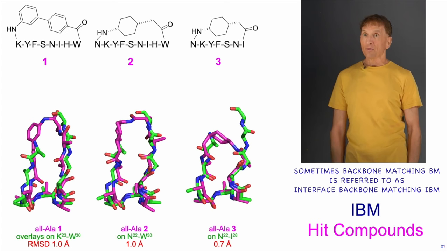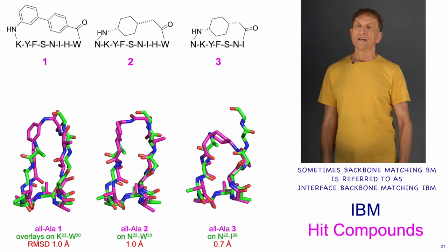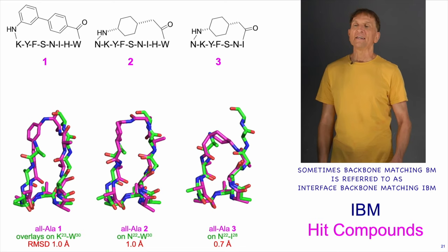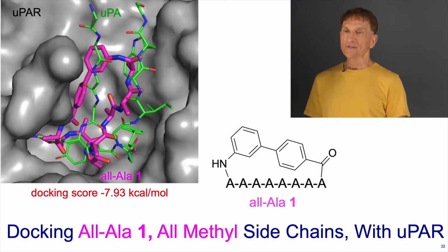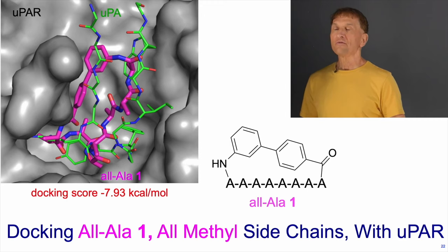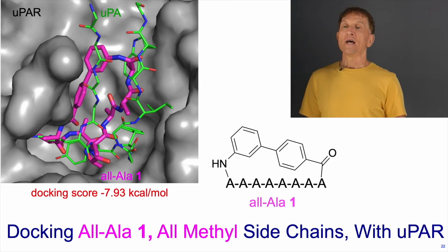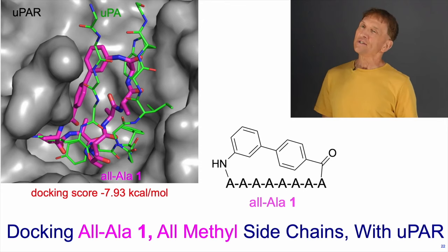We went through the IBM process and found three hits. They are different ring sizes and they overlay with the RMSD shown, which is excellent because we're overlaying every atom in the core conformation. To test these, the first thing we do is take the backbone conformation and attempt to dock it with the receptor, in this case UPAR. Remember, the backbone conformation has all methyl side chains — we call it an all-Ala peptide.